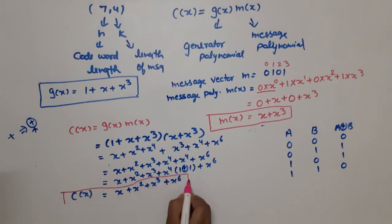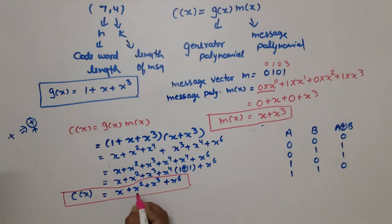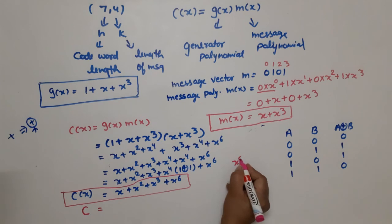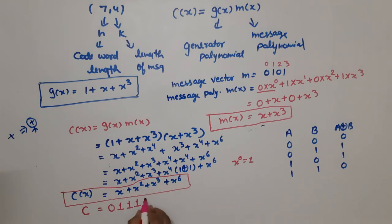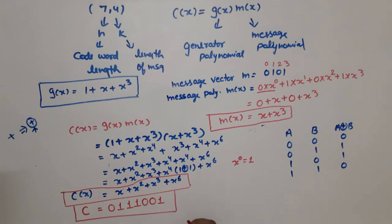Now, if we need it in vector form — since our message was in bit form — we map each power: x⁰ is absent → 0; x¹ is present → 1; x² is present → 1; x³ is present → 1; x⁴ is absent → 0; x⁵ is absent → 0; x⁶ is present → 1. So the codeword vector for message m = (0,1,0,1) is c = (0,1,1,1,0,0,1).